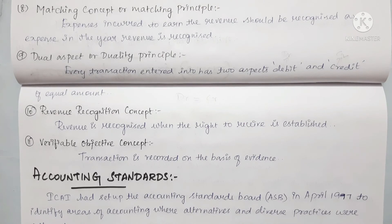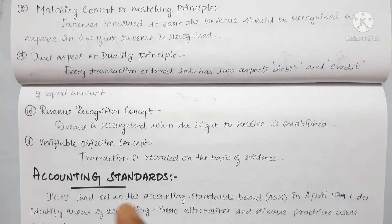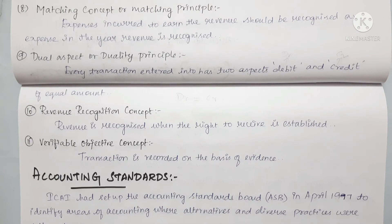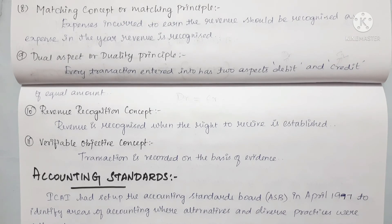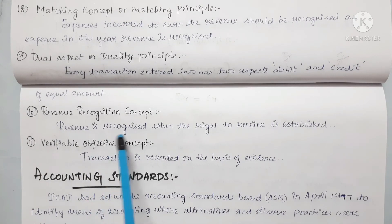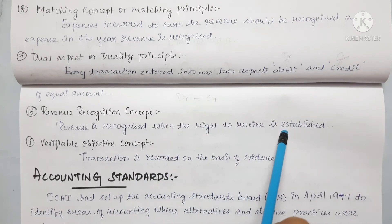The next concept is revenue recognition. Revenue is recognized when the right to receive is established. So when we use the business to earn income, we consider and record the revenue at the point when the right to receive that revenue is established, not necessarily when cash is received.